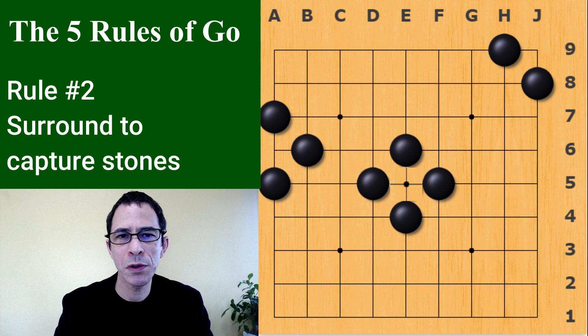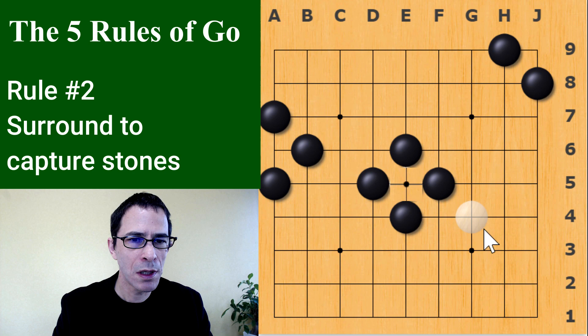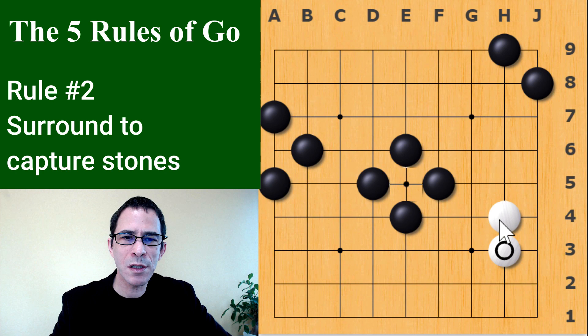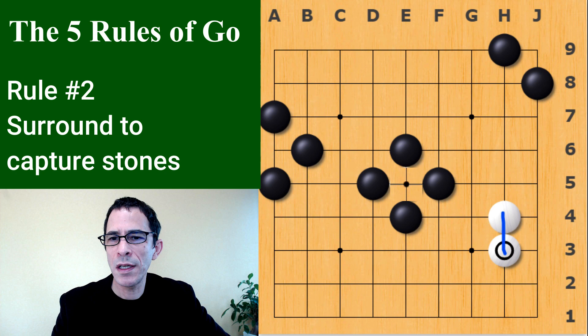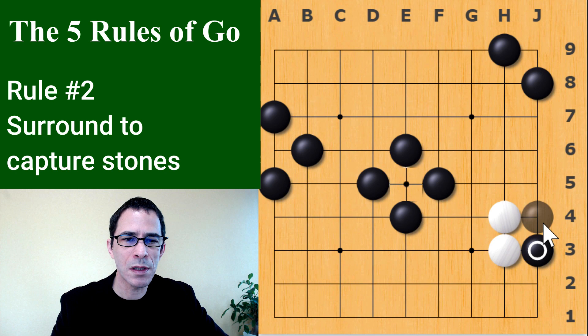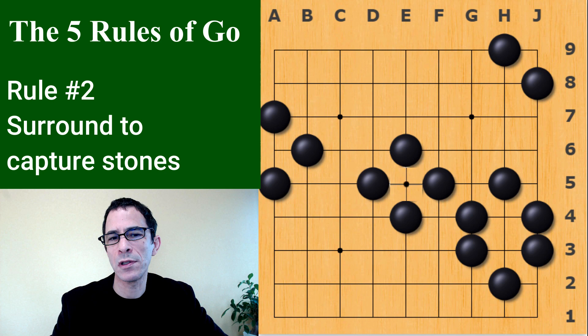One more example: when white has two stones right next to each other, they form a group. That means they're connected and they share their liberties — they share these six points. In order to capture these two stones, black would have to fill all of those points, and black would capture the two stones both at the same time.